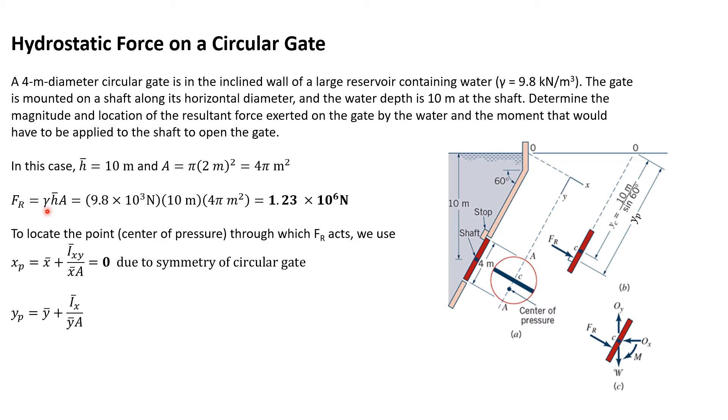We can calculate the force easily. That's γ, which is 9.8 × 10³ N/m³, times 10 meters, times 4π meters squared. We're given γ is 9.8 kilonewtons per cubic meter. When you calculate this out, you get 1.23 × 10⁶ newtons. That's the force F_R that the water is pushing on the gate.